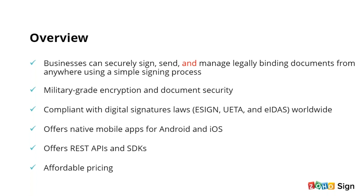Documents signed with Zoho Sign also meet the requirements of the eSign Act in the United States and the EIDAS in the European Union, besides other international laws. Zoho Sign also offers a native mobile app for iOS and Android. Recently, we have also launched our APIs for public usage and we also have SDKs for custom integration. Zoho Sign provides all these features at a very affordable price — you can start with the standard edition at $10 per user per month when paid annually.